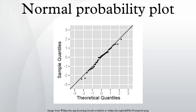Normal probability plots are made of raw data, residuals from model fits, and estimated parameters.